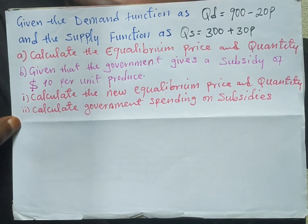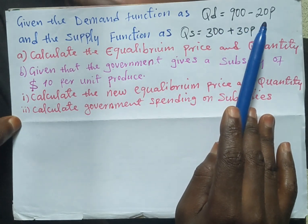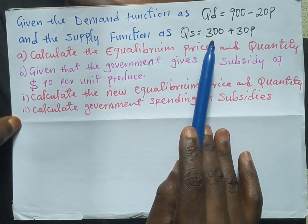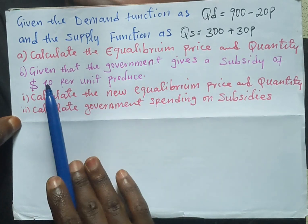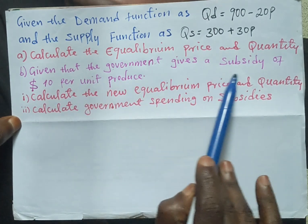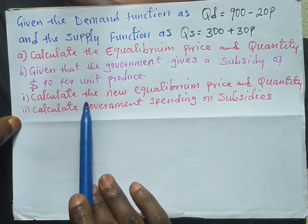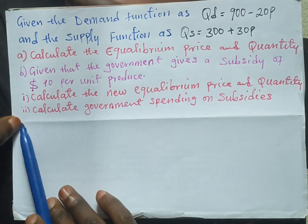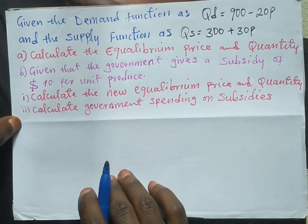Welcome to another session of Sam's Economics Tutorials. In today's video we are going to look at the effect of subsidies on equilibrium price and quantity. The question gives us the demand function QD = 900 - 20P and the supply function QS = 300 + 30P. The first question asks us to calculate the equilibrium price and quantity. Secondly, given that the government gives a subsidy of $10 per unit produced, calculate the new equilibrium price and quantity, and lastly calculate government spending on subsidies.